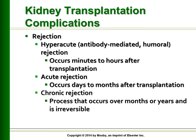Acute rejection is the most common type of rejection with kidney transplant. Clinical manifestations include sudden oliguria, fever, hypertension, fluid retention, enlarged tender kidney, lethargy, elevated serum creatinine, BUN, and potassium levels. Immunosuppressant drugs will have to be increased. Chronic rejection is a process that occurs over months or years and is irreversible. There is a gradual increase in BUN and serum creatinine levels. Conservative management and dialysis may be necessary.